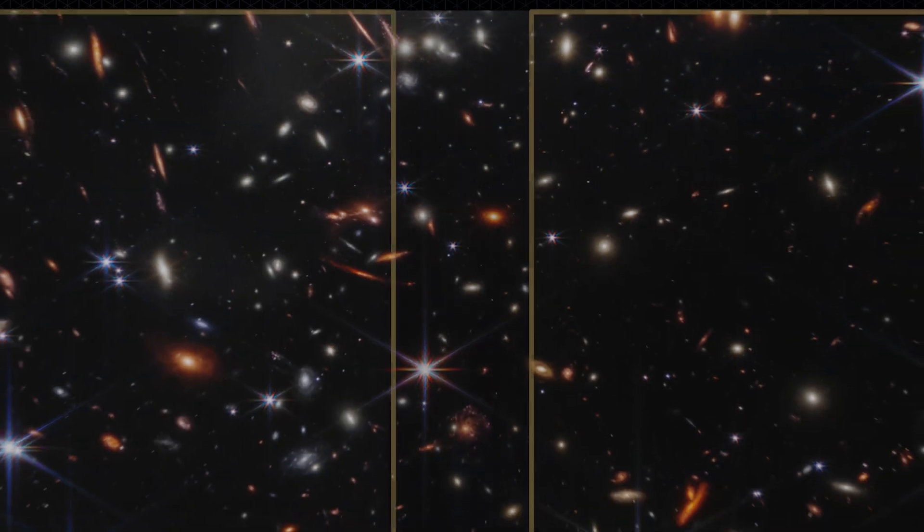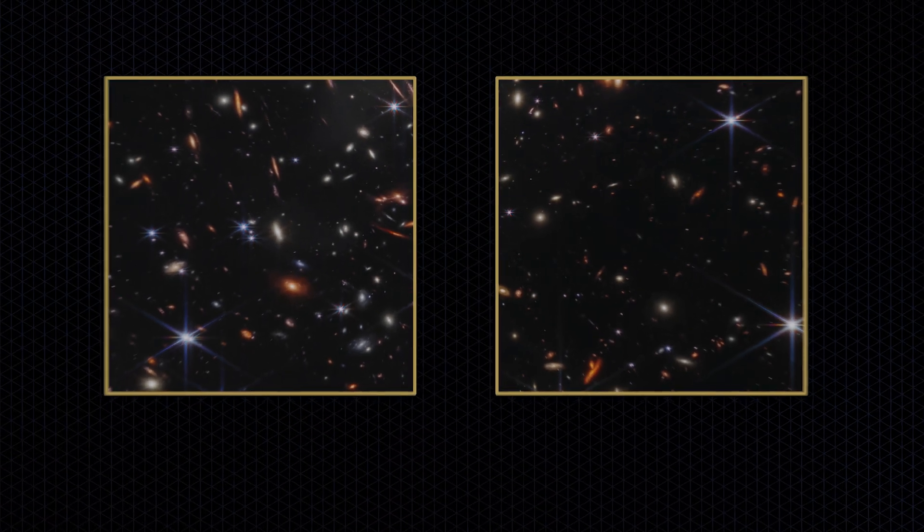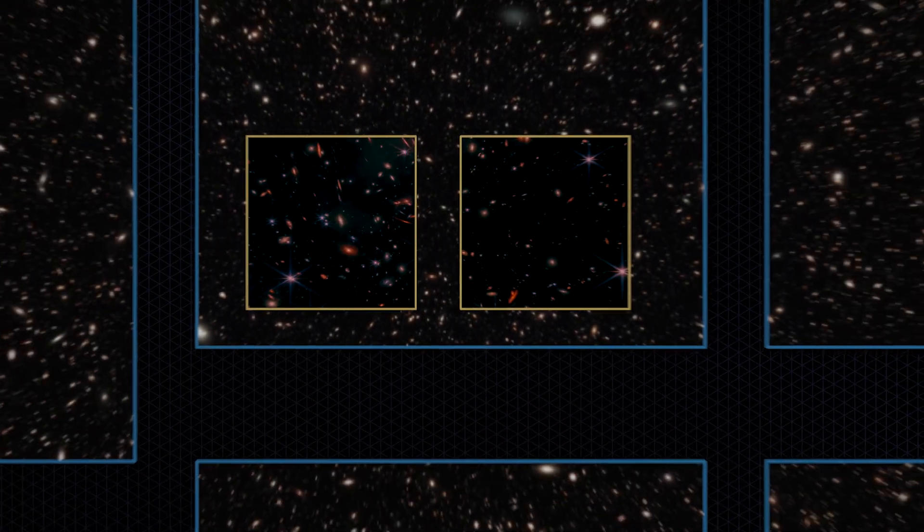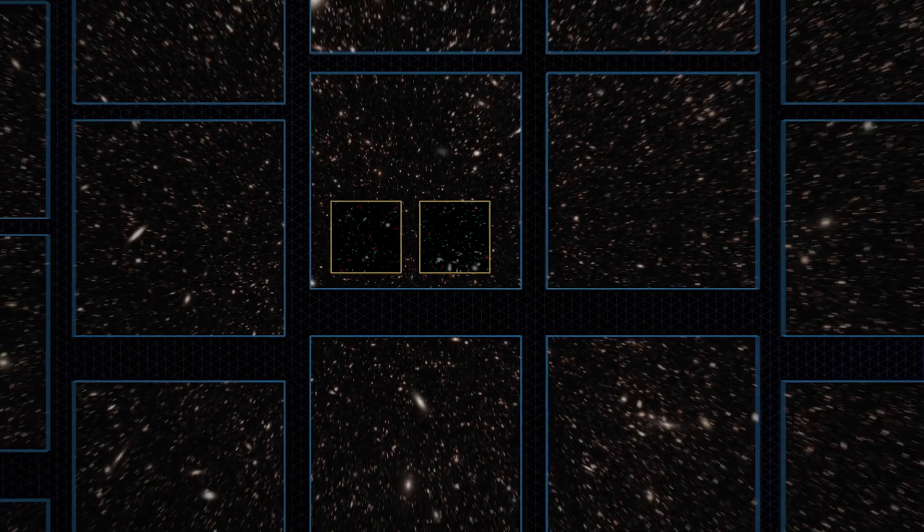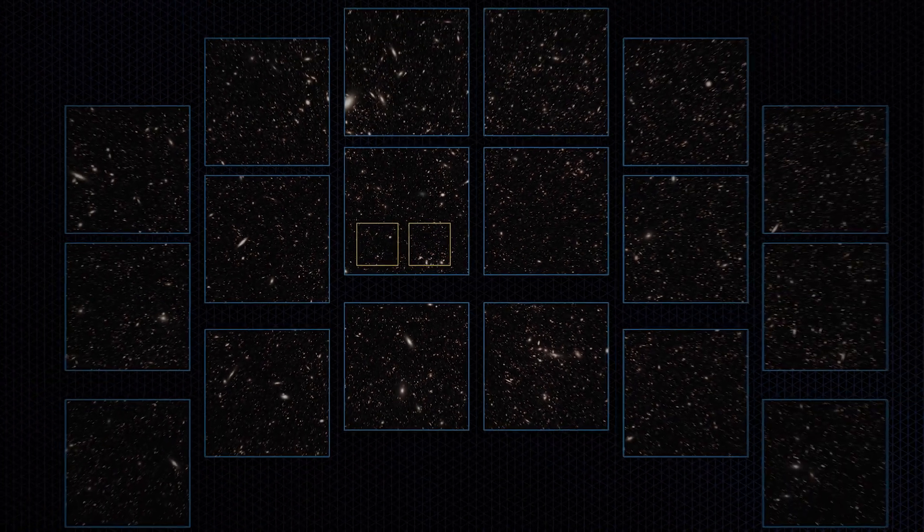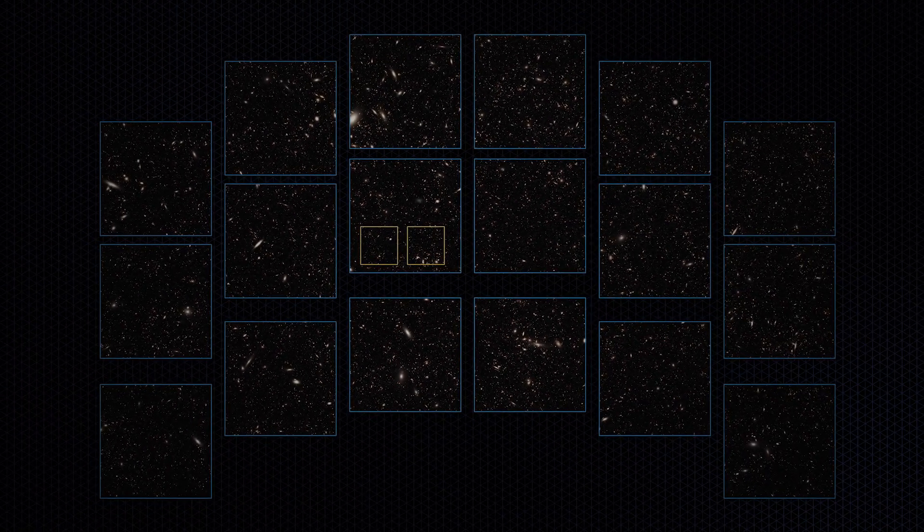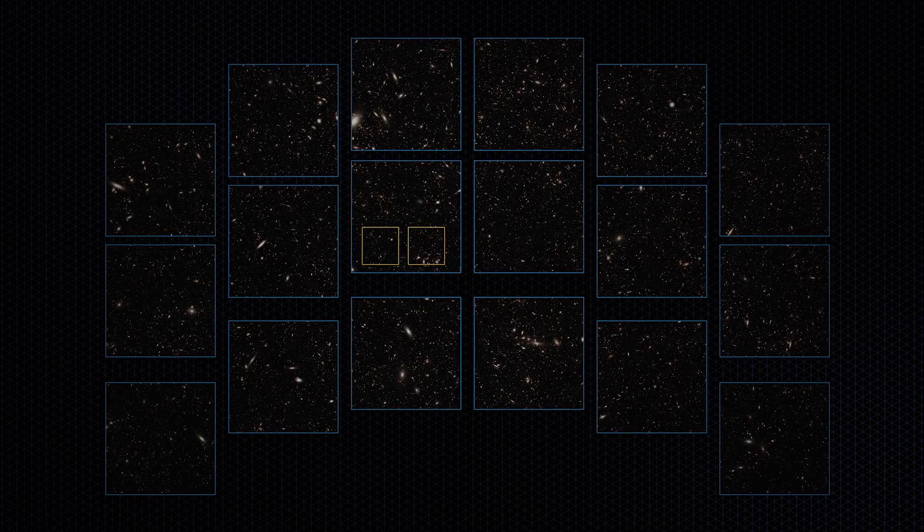While Webb will peer with intense focus at very specific objects and regions, Roman is a survey telescope designed to capture vast swaths of sky. But it will do so with revolutionary precision, sensitivity, and depth.